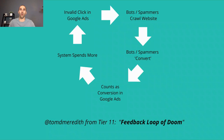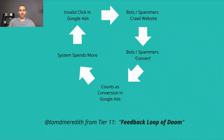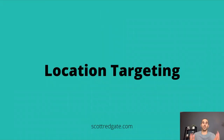I threw out the question to several Google Ads experts on Twitter asking what they're doing to stop invalid clicks, spam traffic, and junk conversions, and received a response that linked to a thread from Tom Meredith from Tier 11. He coined this cycle as the "feedback loop of doom" — invalid clicks lead to bots or spammers crawling your website, the conversions happen and count as a conversion, and then the system spends more as a result. We're going to talk about a few things you can do to cut down on this traffic getting to your website and converting.